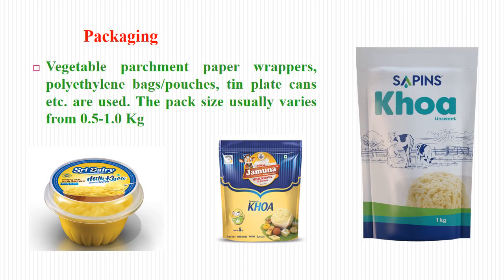Khoa is basically a partially dehydrated product containing the total milk content, so it will have a sticky nature. It is packed using vegetable parchment paper wrappers, polyethylene bags or pouches, or tin plate cans. Nowadays special multi-layer pouches are available with aluminum foil and polyethylene laminates. Simple packaging uses plastic cups with lids. In general packing is around 500 g to 1 kg.